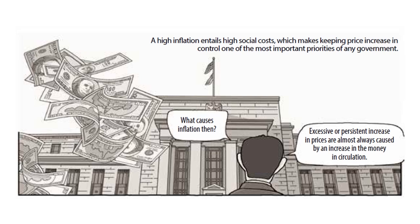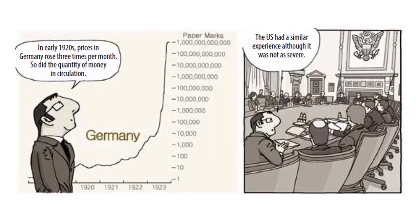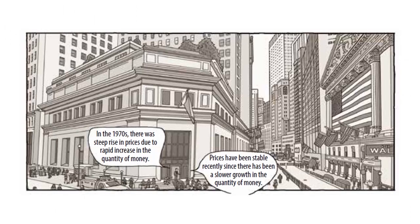Excessive or persistent increases in prices are almost always caused by an increase in the money in circulation. In the early 1920s, prices in Germany rose three times per month, and so did the quantity of money in circulation. The US had a similar experience, although it was not as severe. In the 1970s, there was a steep rise in prices due to rapid increase in the quantity of money. Prices have been stable recently since there has been slower growth in the quantity of money.